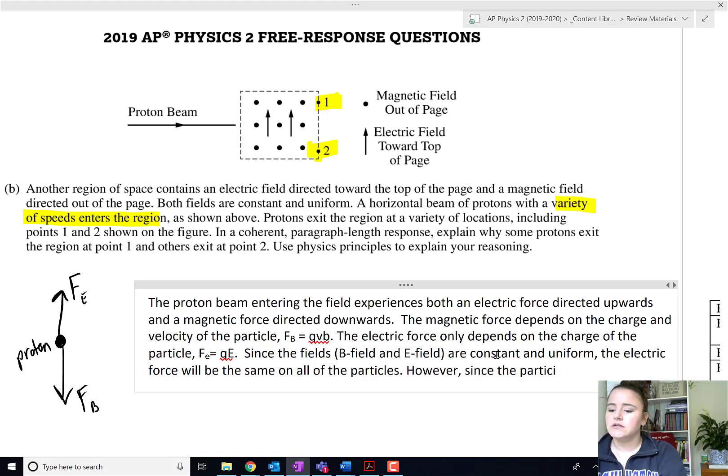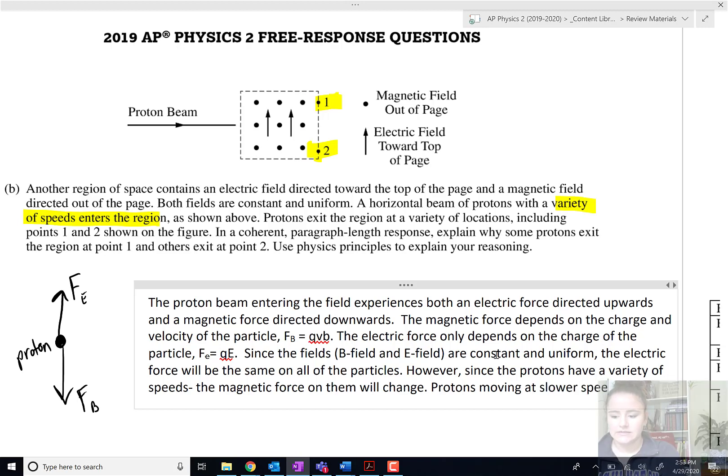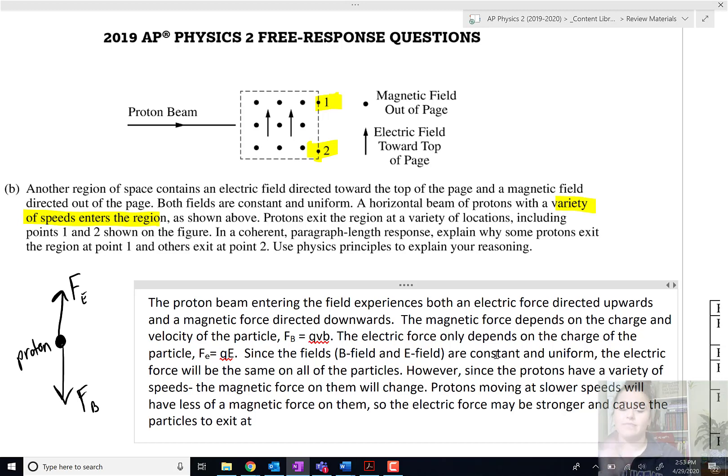However, since the protons have a variety of speeds, the magnetic force on them will change. Protons moving at slower speeds will have less of a magnetic force on them, so the electric force may be stronger and cause the particles to exit at location at point one.